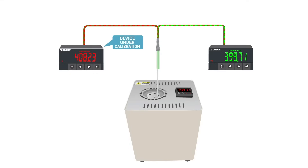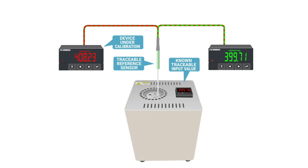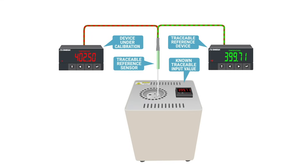The device under calibration is given a series of known input values across its entire measurement range. The output readings are compared to those of the calibration reference with the same input values applied. If a discrepancy is detected, adjustments are made to the device under calibration, bringing it back into its accepted accuracy range.